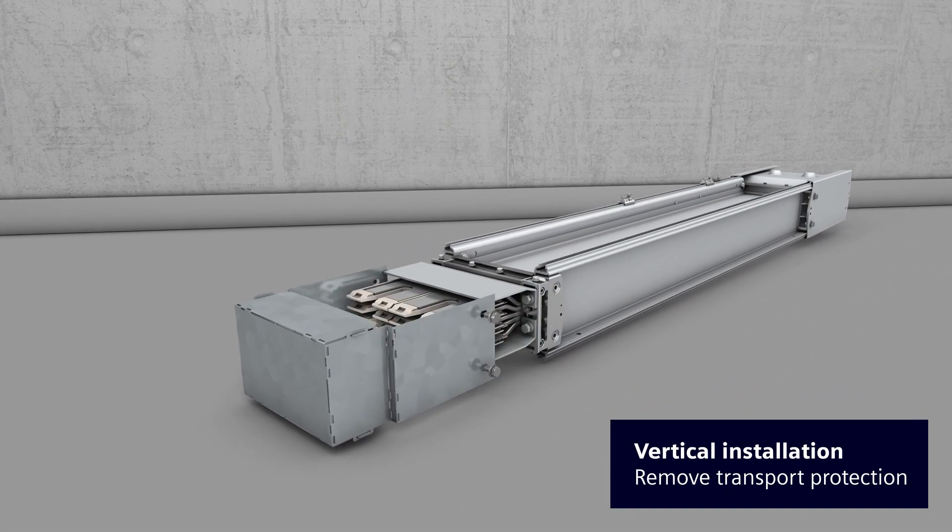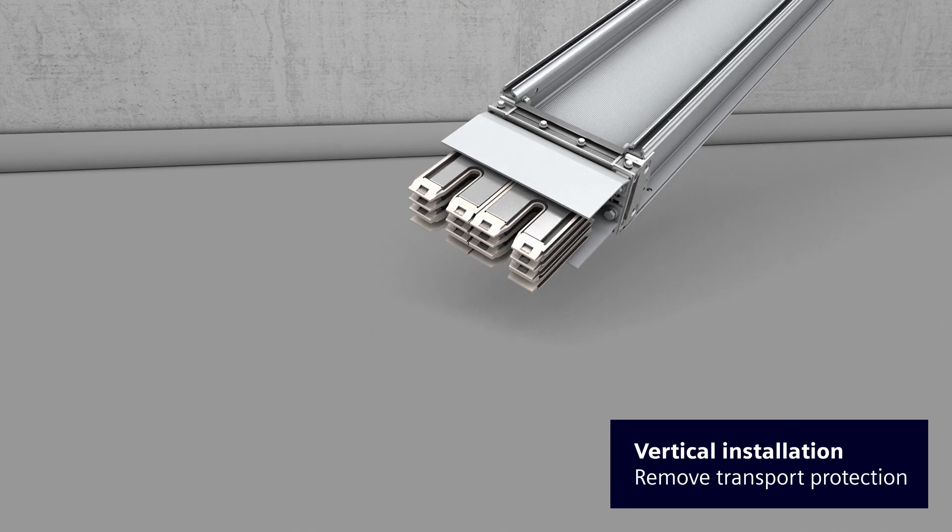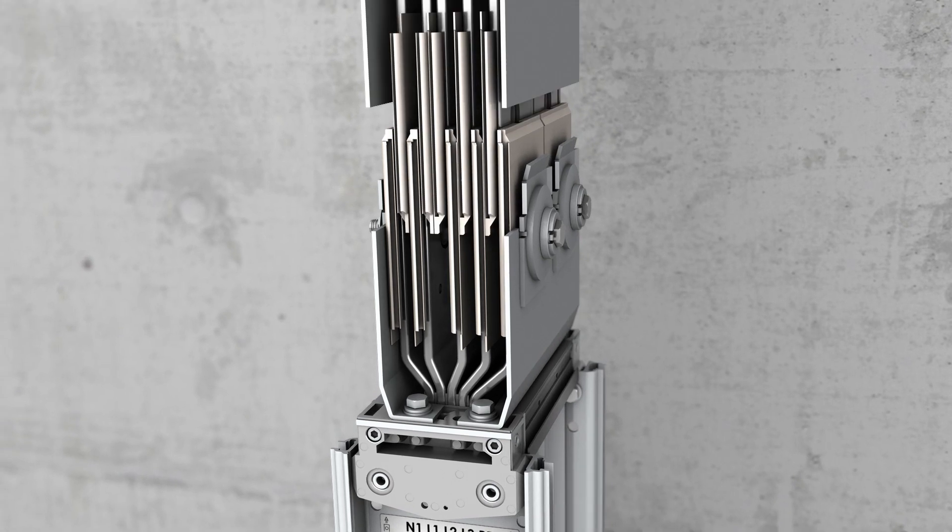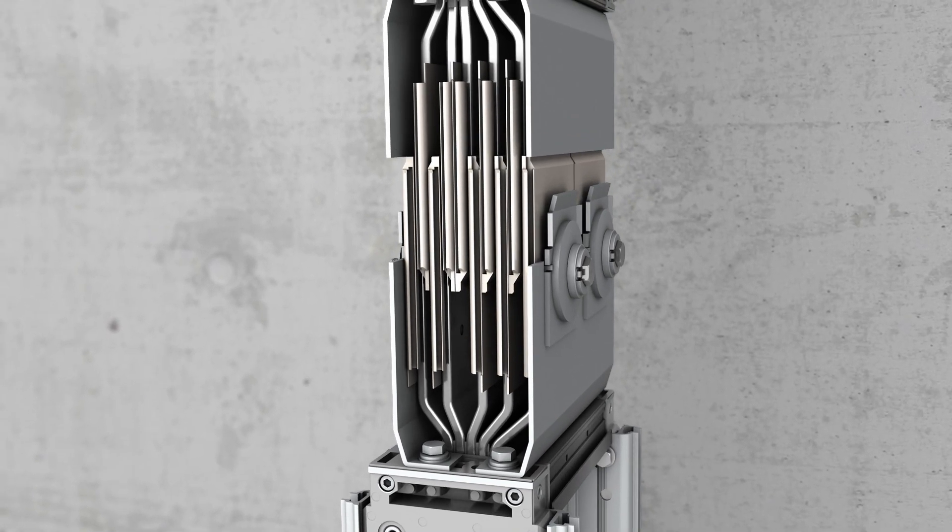Continue with the installation of the next trunking unit by removing the transport protection. The trunking unit can now be mounted on the wall. Installation entails an easy insertion into the terminal block.